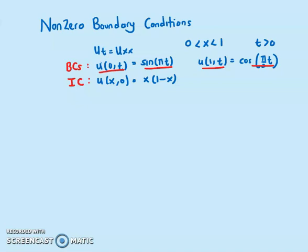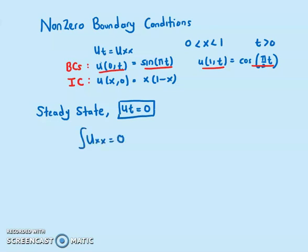The first step to solve this is to use a steady state solution. The steady state solution is given when u_t equals zero, so u_xx equals zero. Integrating once gives u_x = a, and integrating again gives u = ax + b. This is the steady state solution.